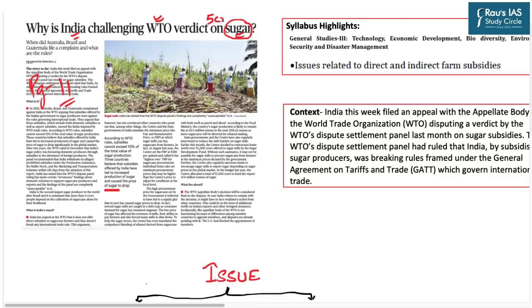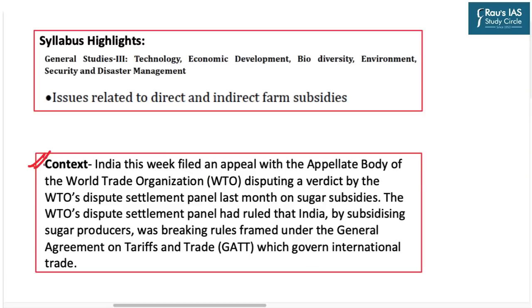Around 5 crore people are directly dependent on sugar for their livelihood. The immediate context is that India has filed an appeal with the appellate body of the WTO disputing a verdict given by the WTO dispute settlement panel on sugar subsidies. Australia, Brazil and Guatemala have contested India's system of subsidies provided to sugarcane farmers, and the WTO's dispute settlement panel ruled that India was breaking rules framed under GATT.